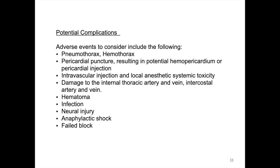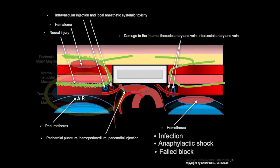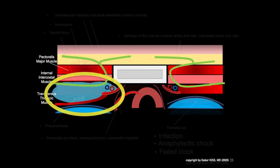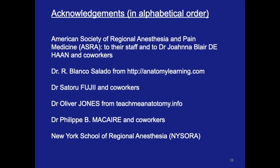Possible complications of a TTP block are summarized here on this slide, and also as a cartoon on this slide. Remember, an indirect indicator of a successful TTP block is the downward displacement of the thoracic plane and the transversus thoracic muscle during injection of local anesthesia.